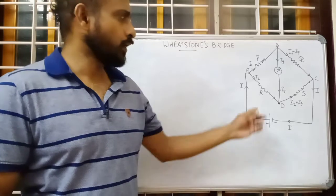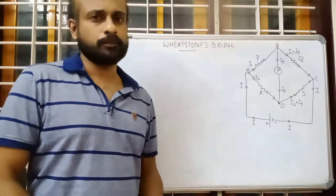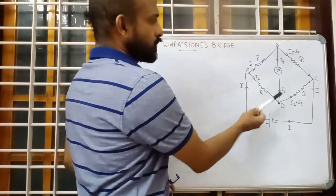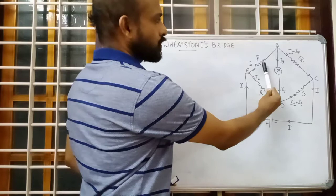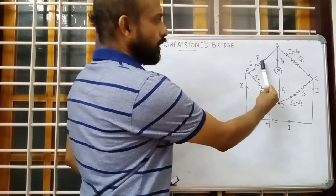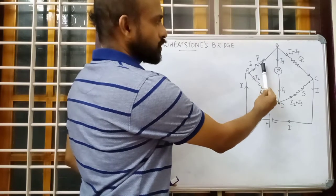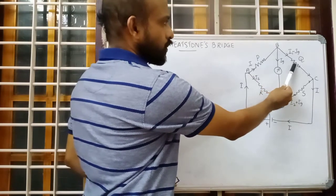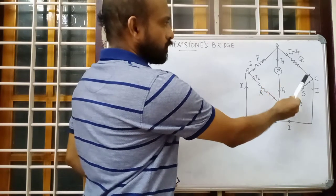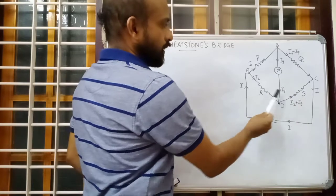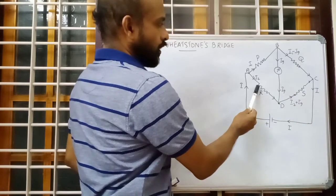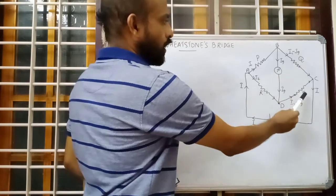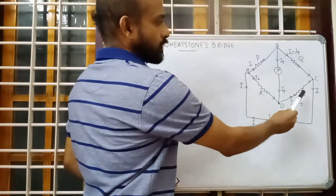Here you can see the diagram. In the diagram you can see four resistors. This is one resistor P — P is the resistance of the resistor — another resistor Q, another resistor S and another R. We have four resistors P, Q, R, S.